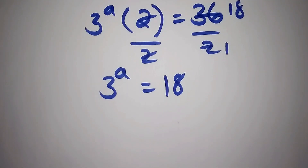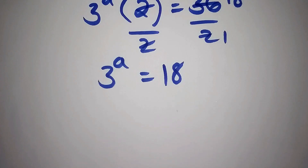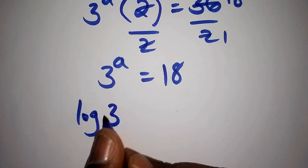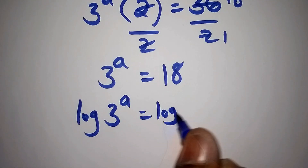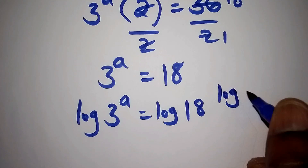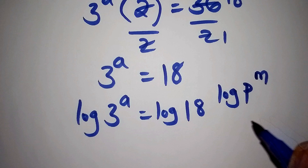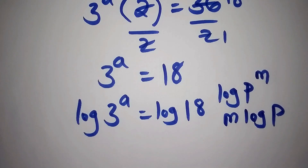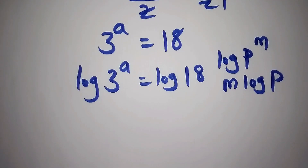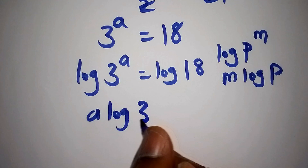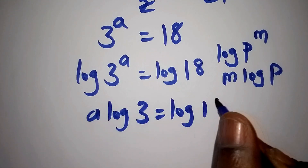Now, how do we move on from here? We introduce the log on both sides, so we have the log of 3 to the power of a equals the log of 18. Remember that the log of p to the power of m can also be written as m times the log of p. So log of 3 to the power of a becomes a times log of 3, equals log of 18.